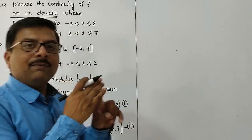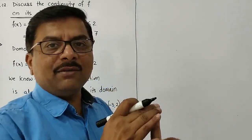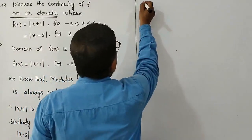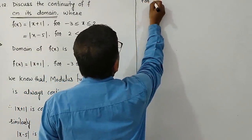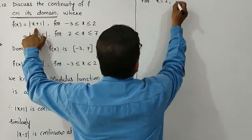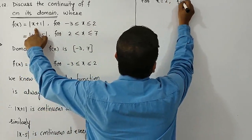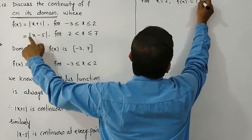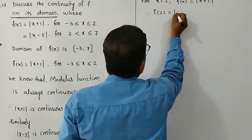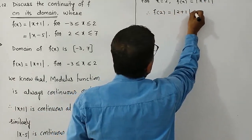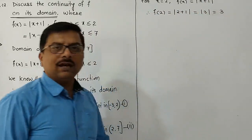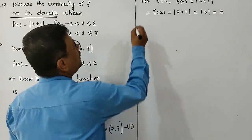We need left-hand limit, right-hand limit, and value of the function. First, let us find the value of the function at x = 2. For x = 2, the function is f(x) = |x+1|. Therefore f(2) = |2+1| = |3| = 3.